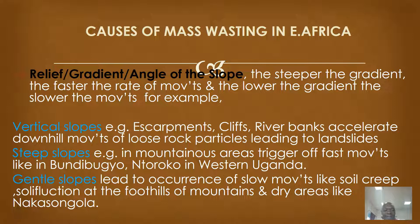The other aspect of relief is the steep slopes. For example, in mountainous areas, these also trigger off fast movements, and they are evident in Bundibugyo, in Ntoroko, in western Uganda, along Mount Rwenzori. The other one is the gentle slopes. These lead to the occurrence of slope movements such as soil creep and solifluction, mainly at the foothills of mountains and in dry areas like Nakasongola.